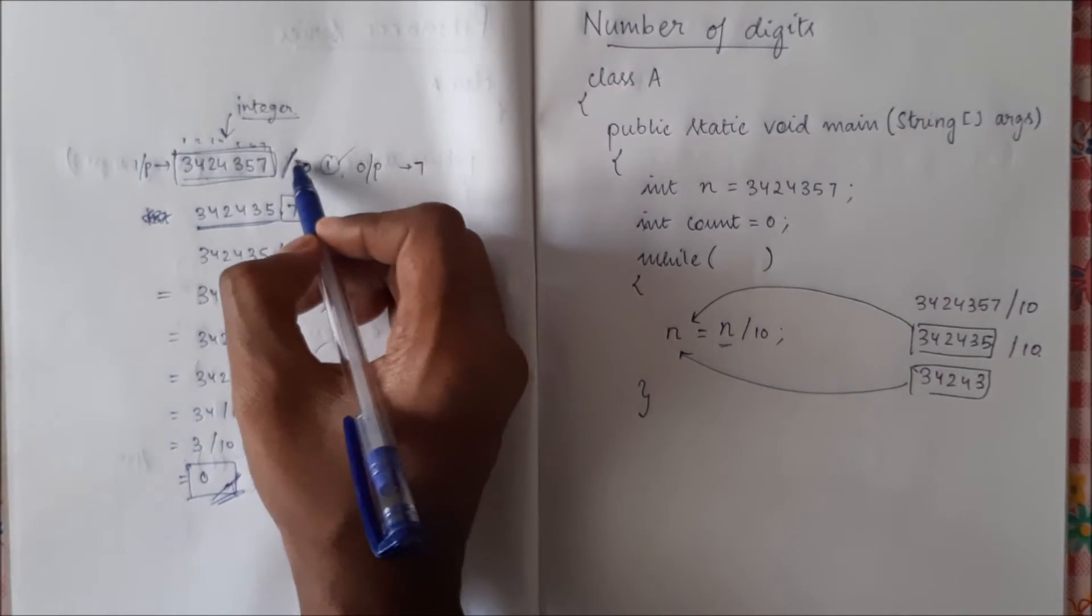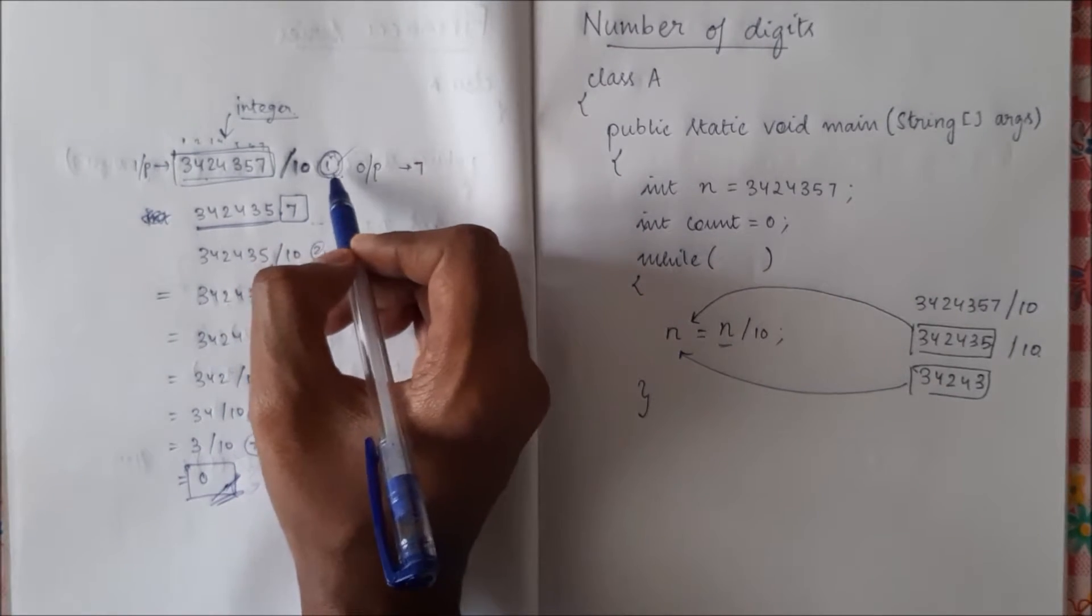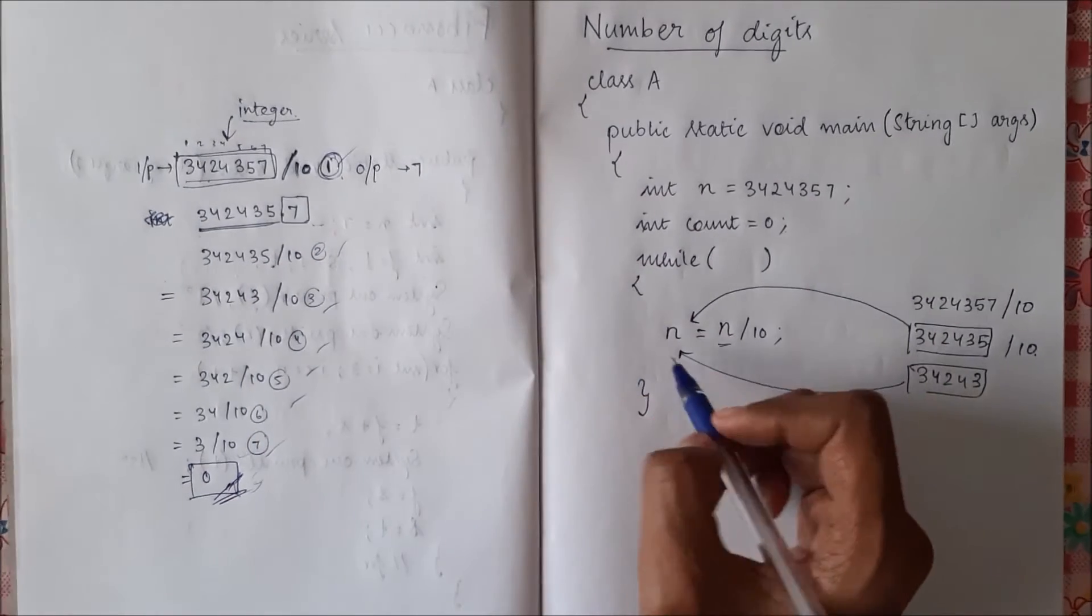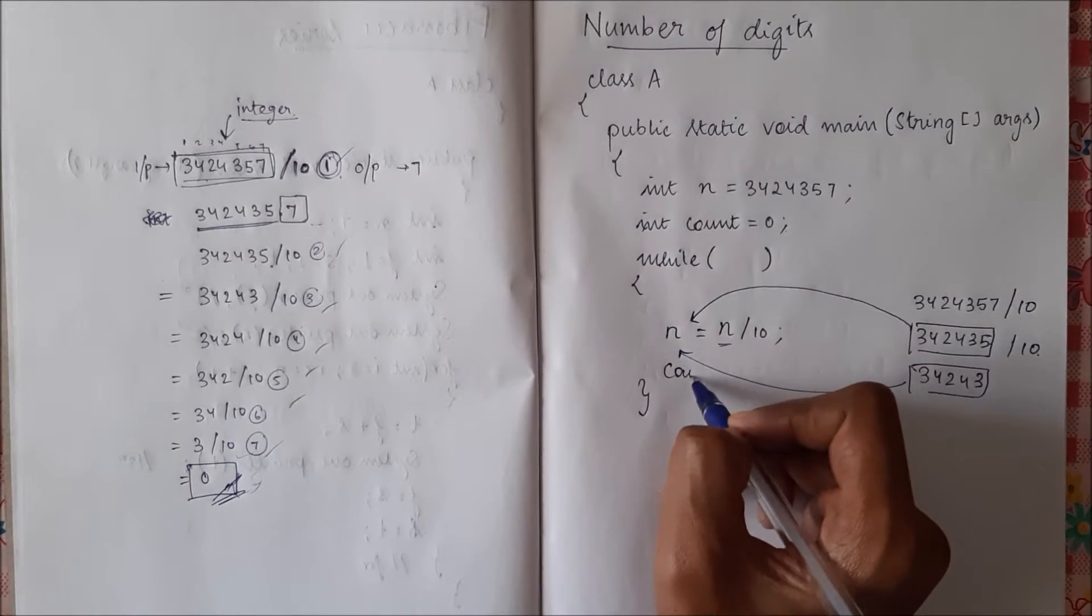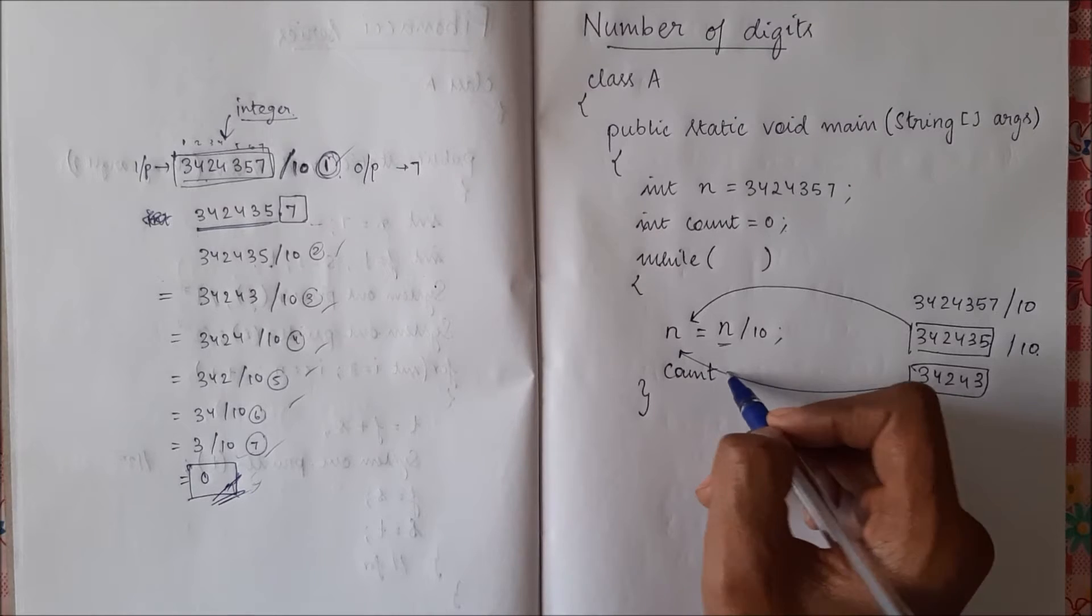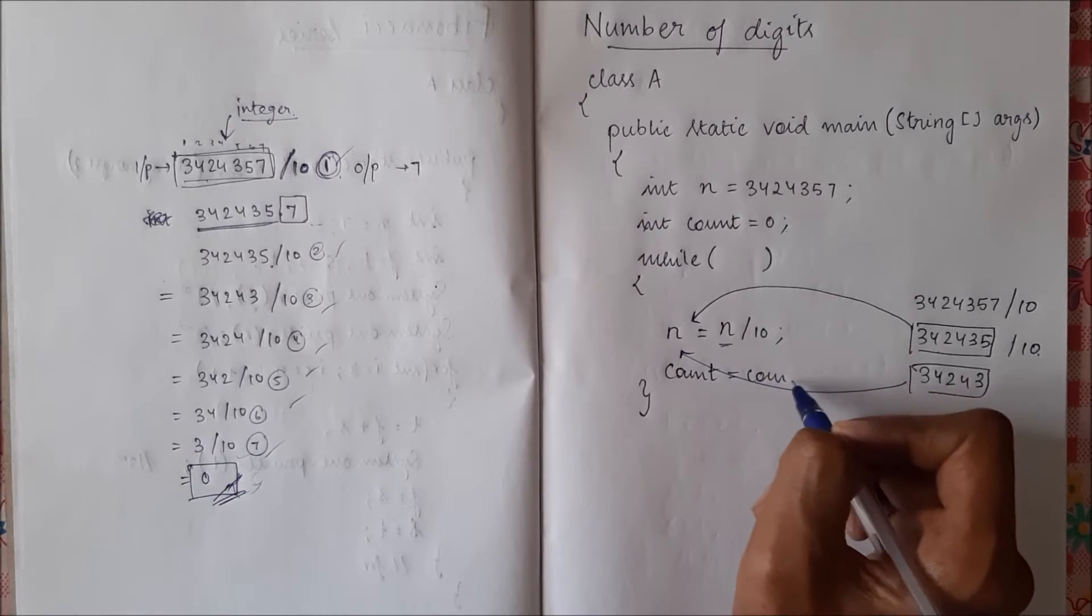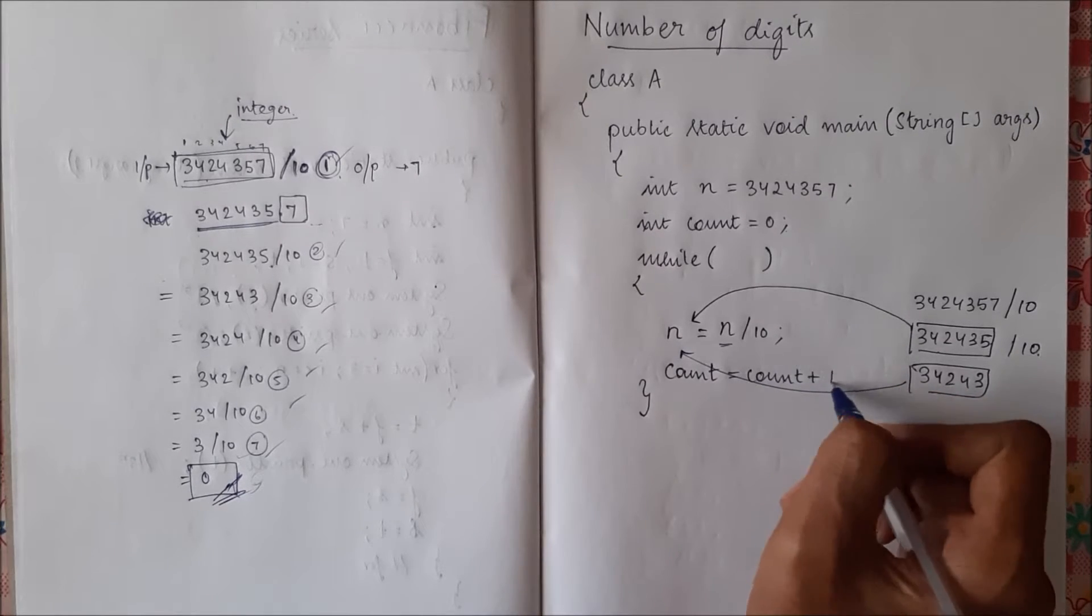After doing this, once when we divide it by 10 we are doing count once, so I'll say count equal to count plus 1.